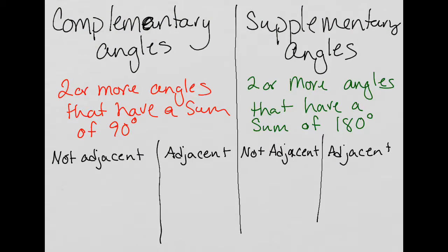Complementary and supplementary angles are very commonly mixed up with each other. They are angle sets, two angles or more, that have a sum of 90 to be complementary and 180, sum of 180 to be supplementary. An easy way to remember that is C, the letter C for complementary, comes before S. 90 degrees for complementary is less than 180 degrees.